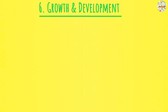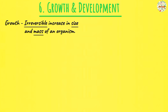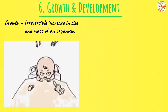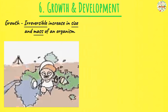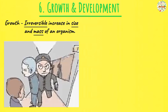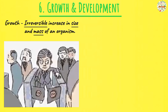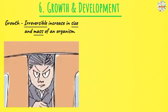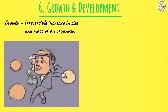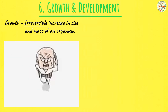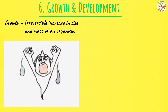On to our next characteristic: growth and development. Growth is defined as the irreversible increase in size and mass of an organism. You can use the term irreversible or permanent — either is correct. It simply means a permanent increase in the size and mass of an organism. When an organism grows, it increases its size and mass permanently, so a toddler growing to become a young boy does not go back to its original size.